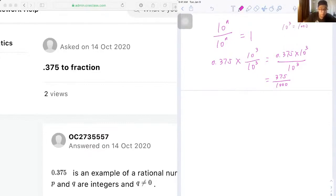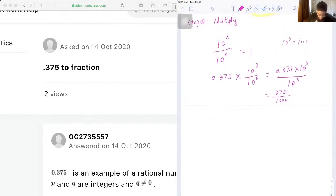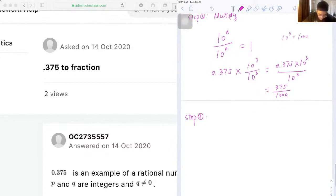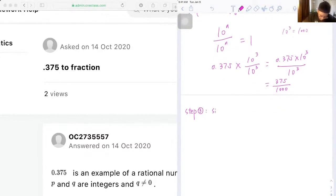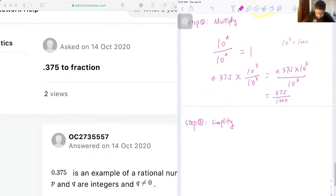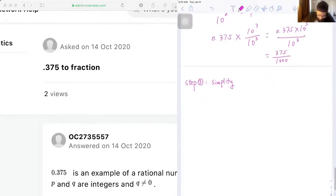Okay, so now we are done with the multiply step, and then we need to do our third step, which is our last step as well, which is simplify. We need to simplify the number we got from step two into its lowest term if possible. Okay, so now let's see, we got 375 over thousand.